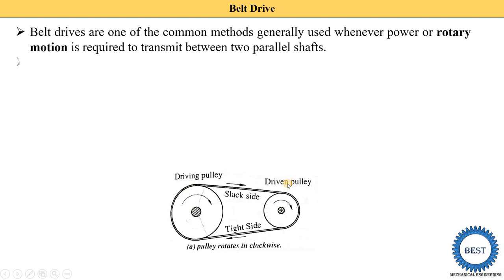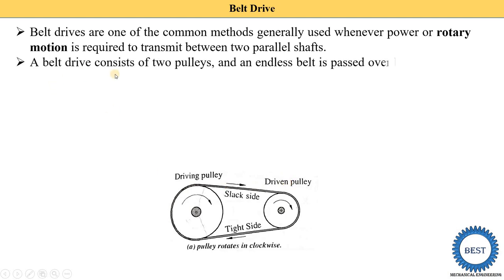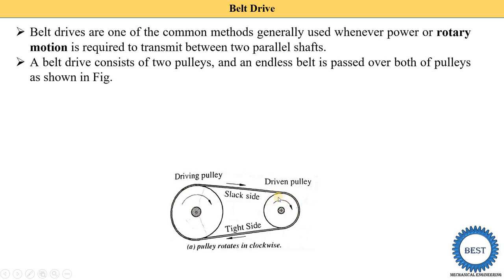A belt drive consists of two pulleys. One pulley is called the driving pulley, and this driving pulley is installed on the driving shaft. As you can see, on the driving shaft the driving pulley is mounted using a key. The second pulley is called the driven pulley, and this driven pulley is installed on the driven shaft, also fitted using a key.